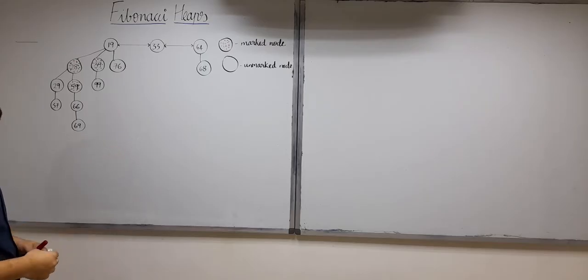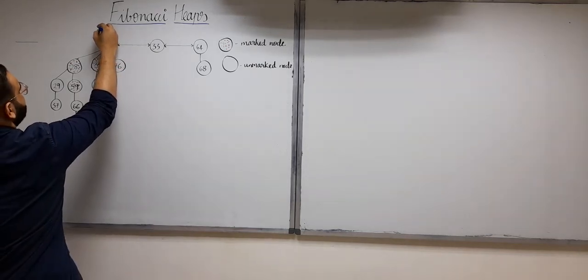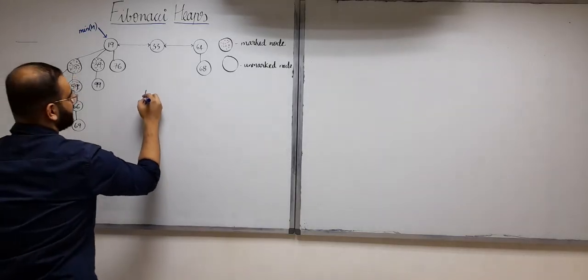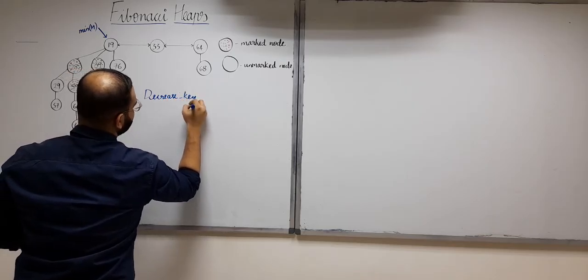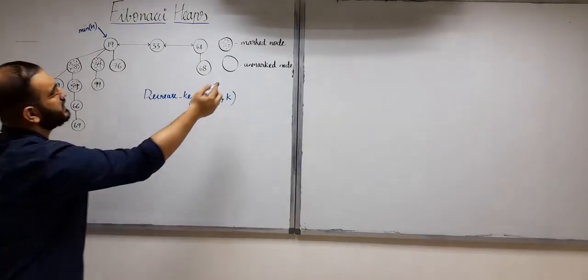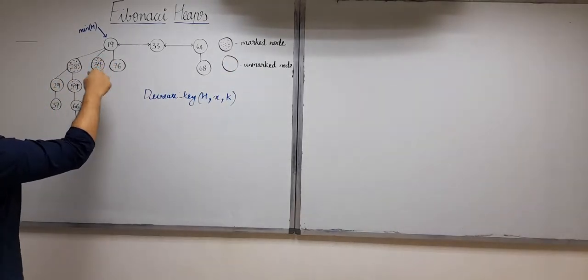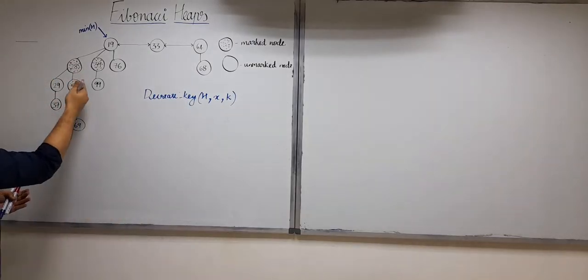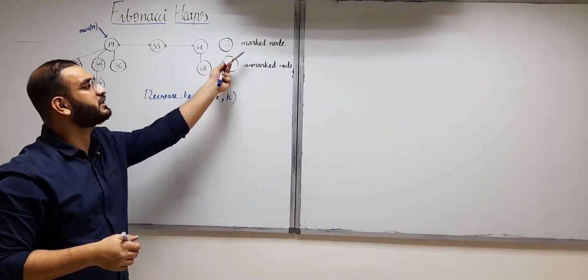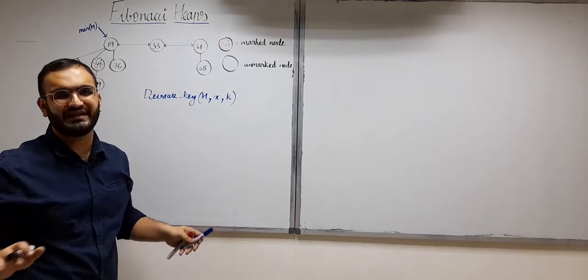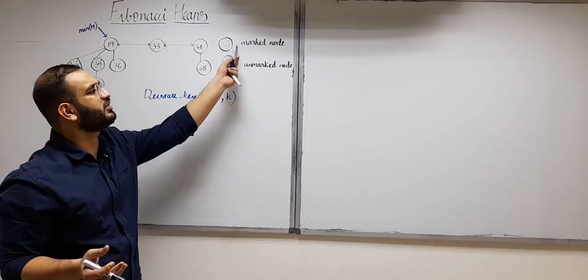I'm considering this Fibonacci heap as an example to explain the decrease key operation. In a Fibonacci heap there is a pointer that is always pointing to the minimum element of the heap. The decrease key operation changes a node whose value is X to K. I have denoted the marked nodes with a black circle and they are dotted, whereas the unmarked nodes are undotted like 33, 68 and 64. The marked nodes are 28, 59 and 39 in this example. Marked nodes are those nodes who have actually lost a child, whereas unmarked nodes have not lost any child.